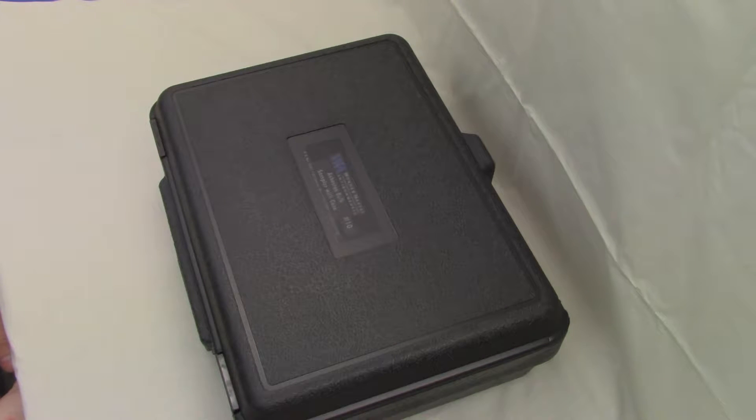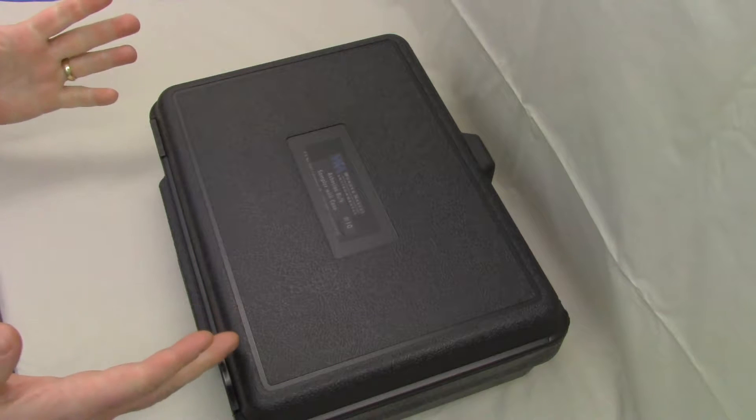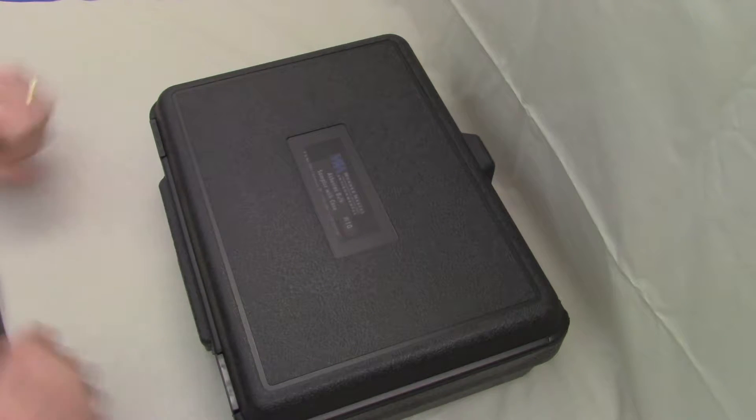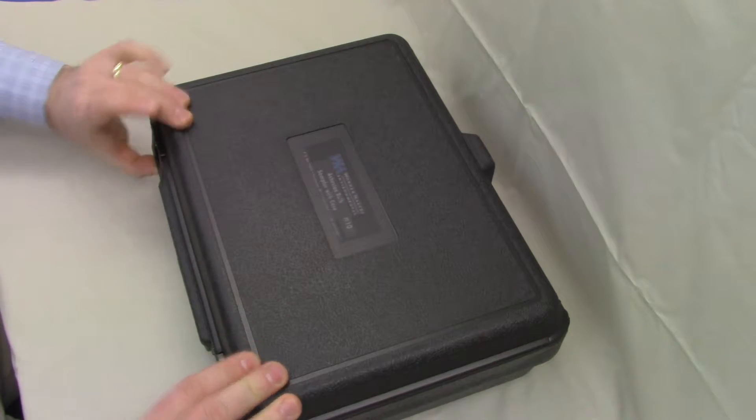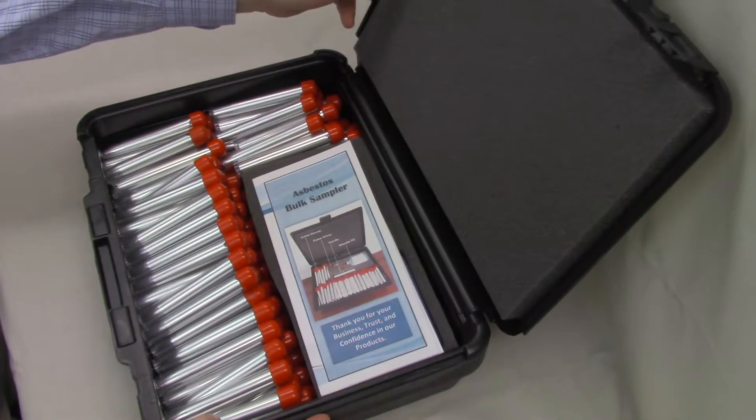Hello, my name is Jacob with Wondermakers Environmental, here to demonstrate the contents and use of the asbestos bulk sampler case containing the Wondermakers bulk sampling tool. Here's your case with your label on it. To open the case, we're going to detach these two plastic latches on the front, lift the lid up, and look at the contents.